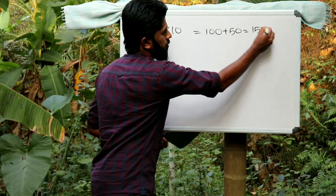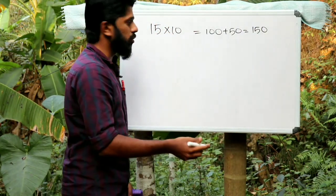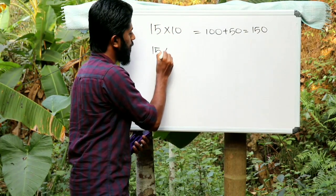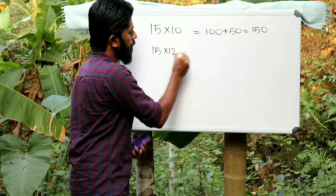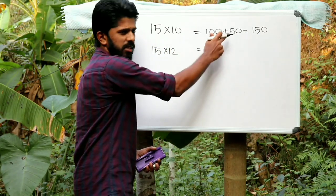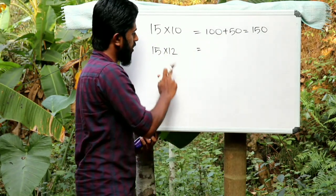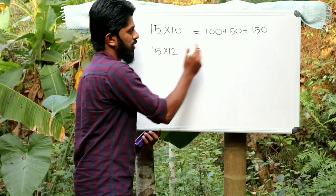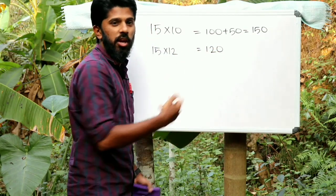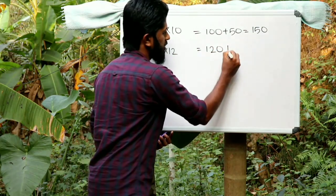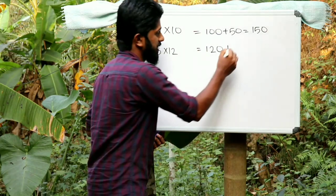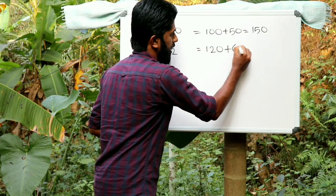The answer is 150. Now, 15 times 12: using the same method again, 120 plus one — doing the half — three or six, therefore the answer is 180.